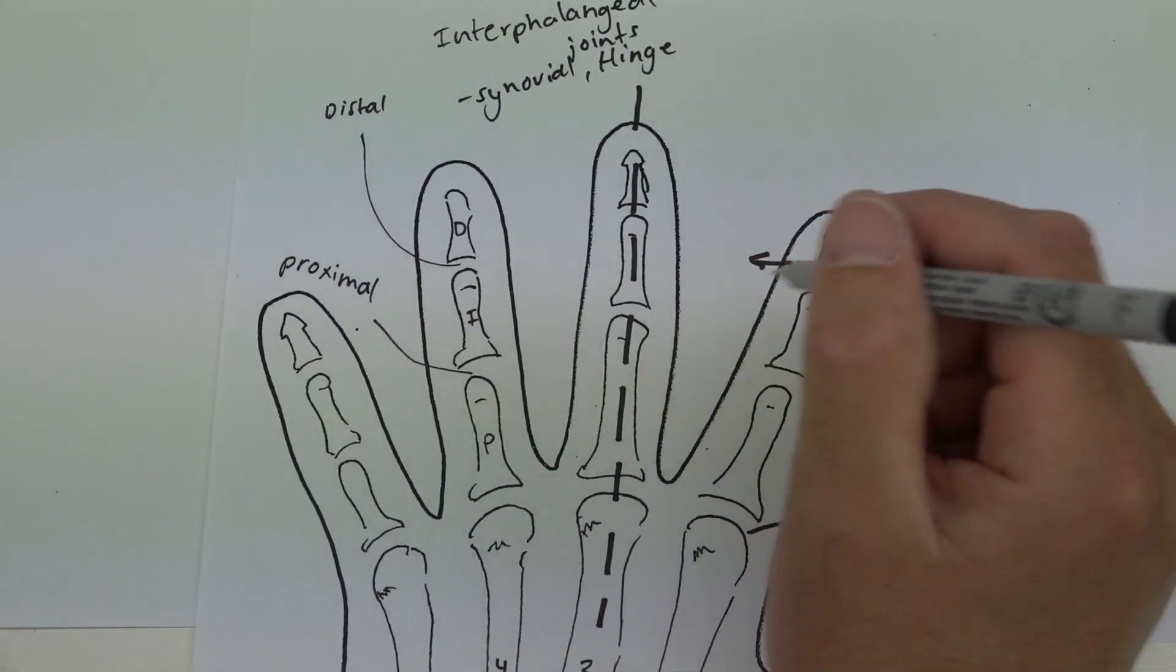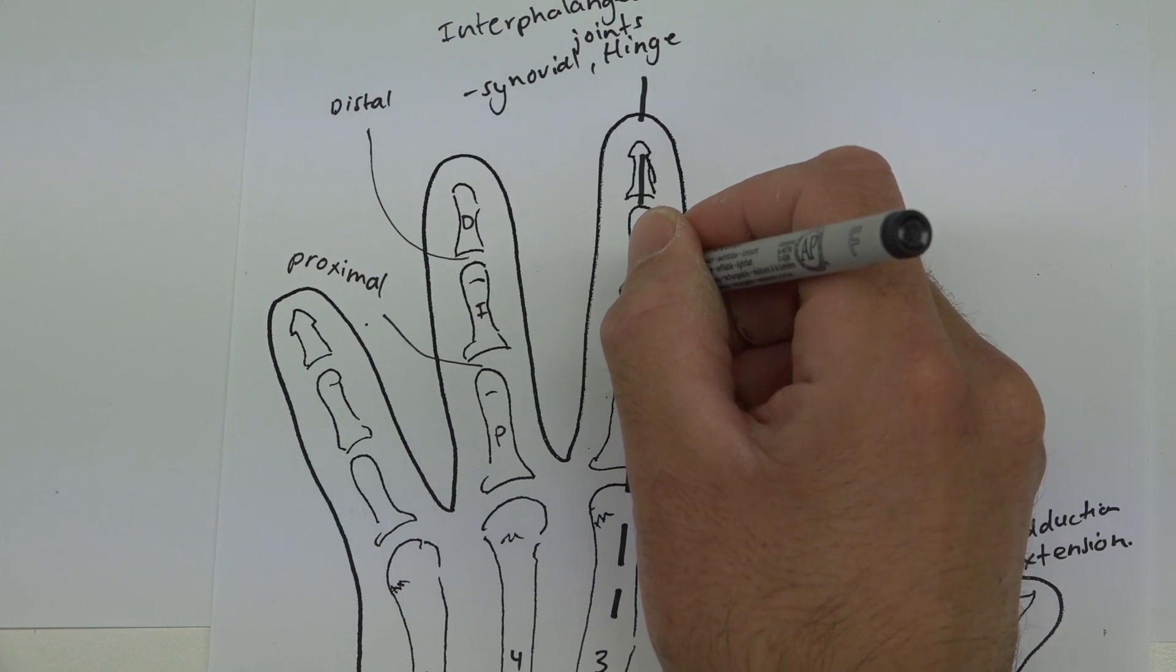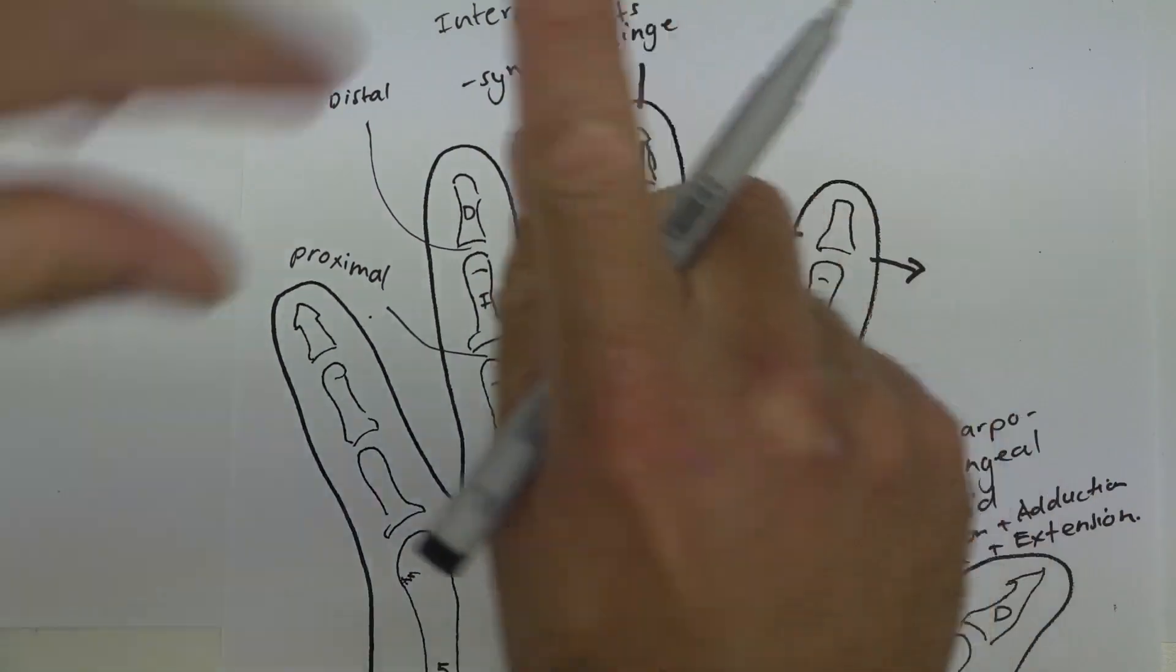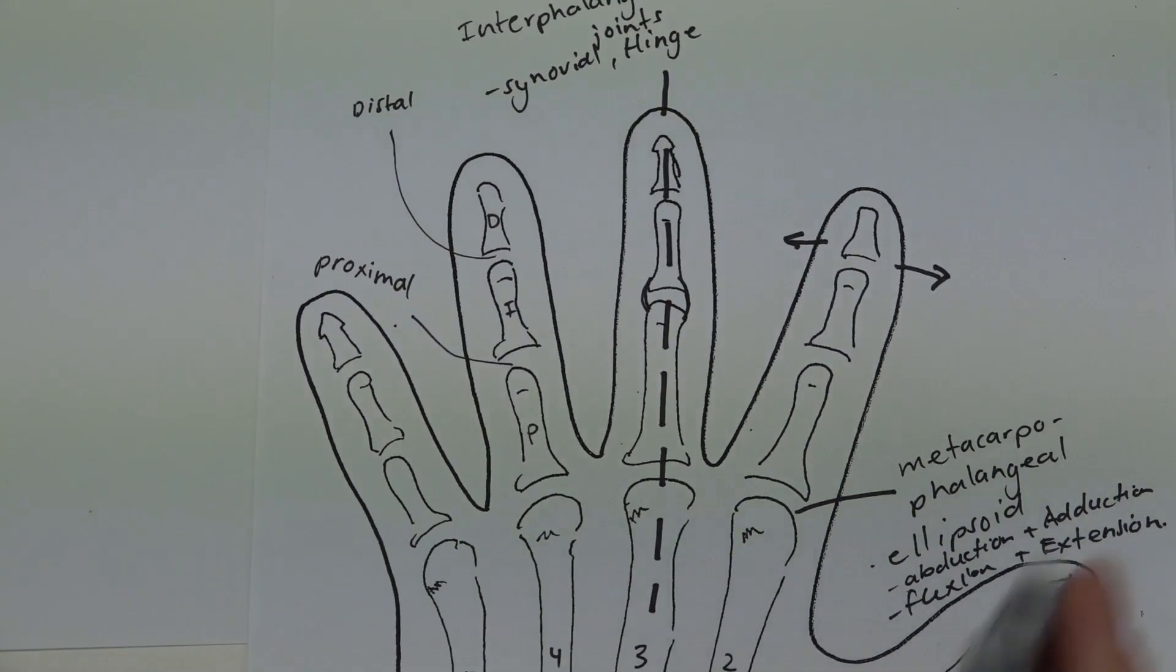You would expect any ligaments around your interphalangeal joints, because they are hinge, to have collateral ligaments. They're going to resist sideways forces like varus and valgus forces that we've discussed in the past. Ready for the next video, we'll talk about some of the muscles of the hand.